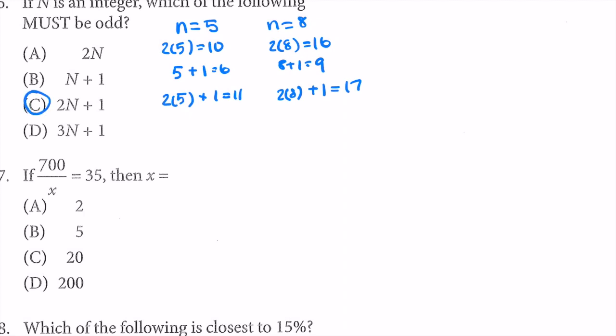Just to prove we didn't mess up: option D, 3n + 1 — 3 times 5 is 15, plus 1 equals 16, that's even. And 3 times 8 is 24, plus 1 is 25 — one even, one odd. They're not both odd, so that's definitely not true. Answer is C.